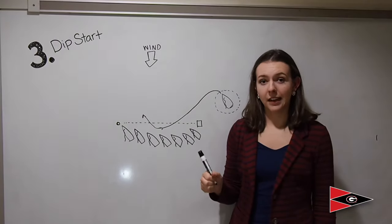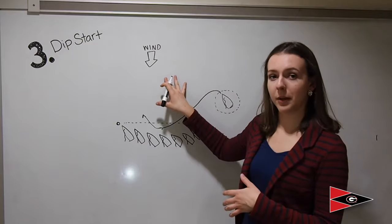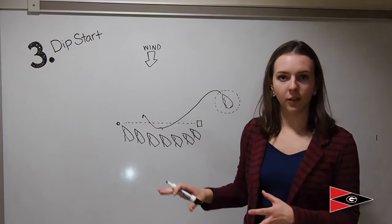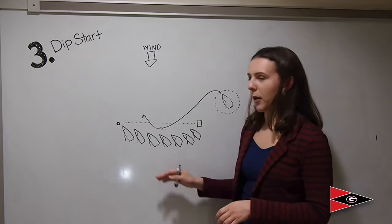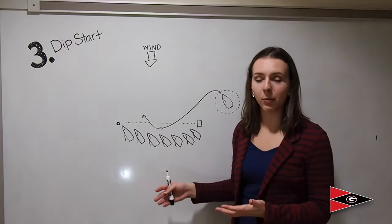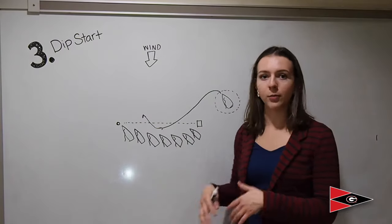Also be aware of current if you're sailing in an area that has current. If the current is coming in the same direction of the wind, this line sag will be much more exaggerated. If the current is coming in the opposite direction there probably won't be too much of a line sag if anything at all. People will be fighting to get below the line because they're being pushed across.